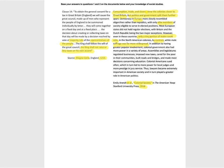In addition to greater population involvement, colonial government also had more power in a variety of areas. Assemblies and legislatures regulated business, imposed new taxes, cared for the poor, built roads and bridges, and made most decisions concerning education. Colonial Americans sued often, which led to more power for local judges and more prestige in jury service. Thus, lawyers became extremely important in American society and played a greater role in American politics. So before going back to the questions: the Magna Carta talked about majority rule and the king not levying taxes without a vote from representatives. The second document talks about how the colonies were close to Great Britain but their governments put them apart — Europe was more about elites, whereas in contrast suffrage was much more widespread in the colonies.